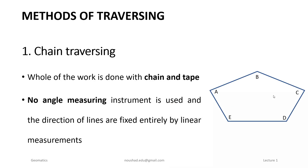For example, in a traverse A, B, C, D, E — the lengths AB, BC, and CD are measured by using chain and tape. The direction in which the angle cannot be measured because we are not using any angle measuring instrument. The direction is determined using the chain and tape only.